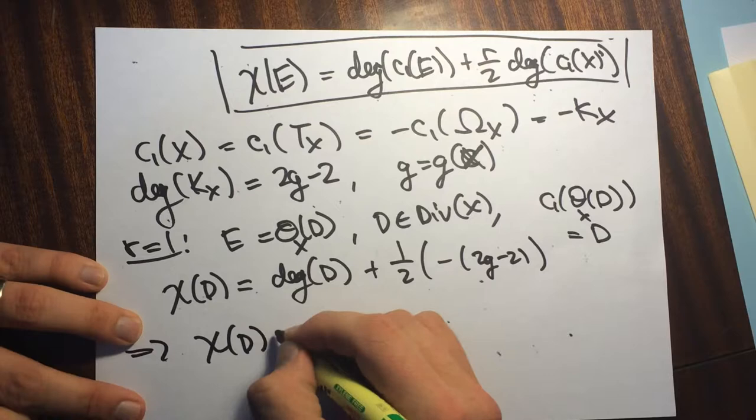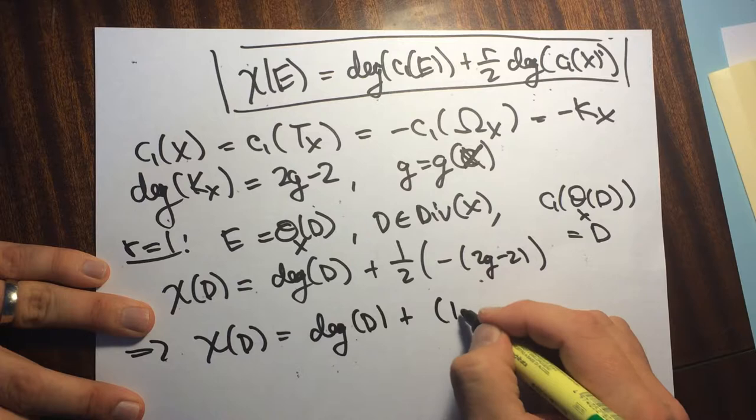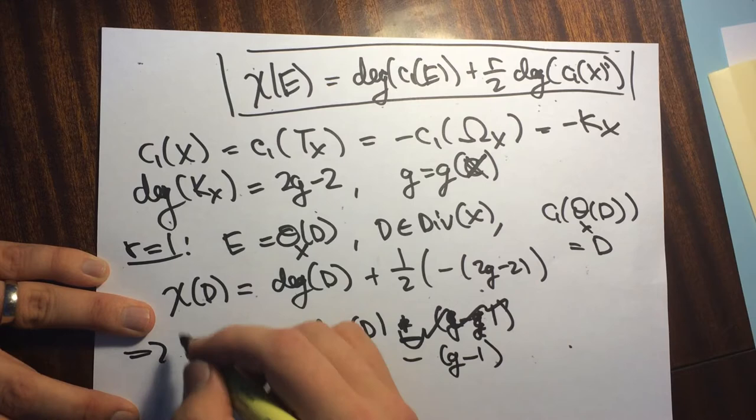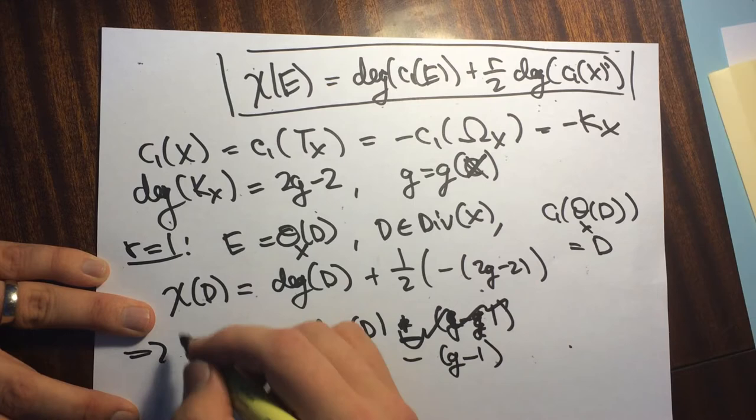This tells us that the Euler characteristic of D equals the degree of D plus 1 minus G, i.e. minus G minus 1. So this is the formula for the classical Riemann-Roch, which is what we wanted. This shows how to go between the Grothendieck-Riemann-Roch formula and the classical one.